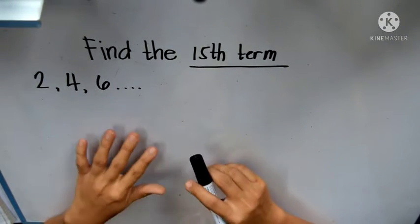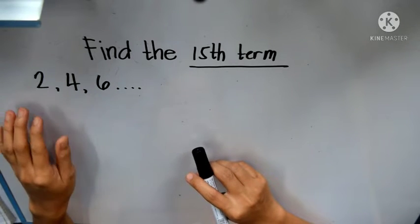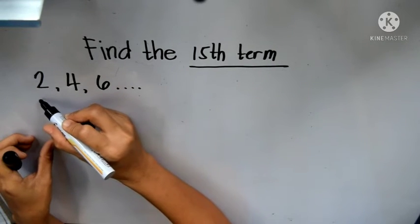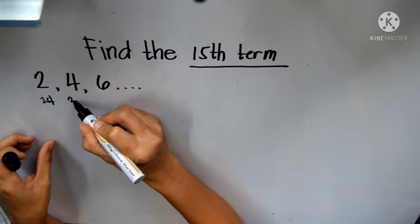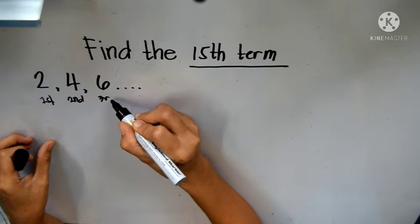How we'll do this without the need of counting from... Let's have 2 as our first term, 4 is our second term, and 6 is our third term.